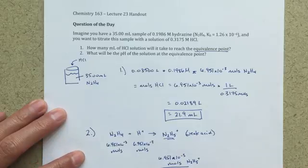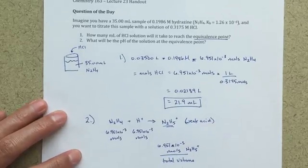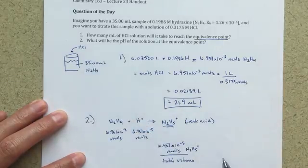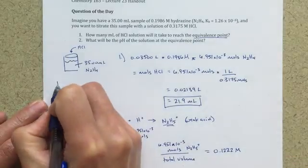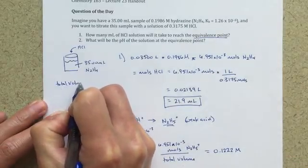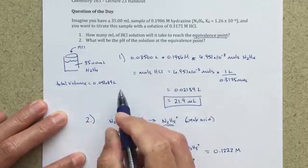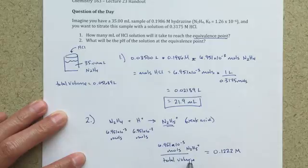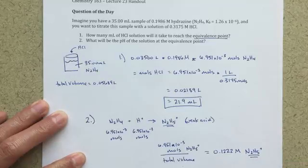Now I would divide this by my total volume to figure out the molarity of N2H5+, so divide by the total volume, which in this case is going to be the 35 milliliters plus the 21.9 milliliters. So that's going to equal 0.1222 molar. The total volume after we've done the addition is going to equal 0.05689 liters. So just adding 35 milliliters to 21.9 milliliters converting to liters, you get this total volume. So this is my molarity of N2H5+. That's a weak acid.